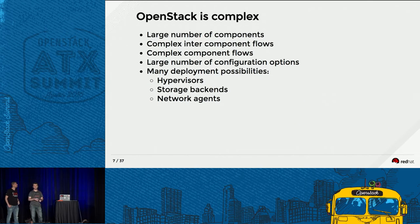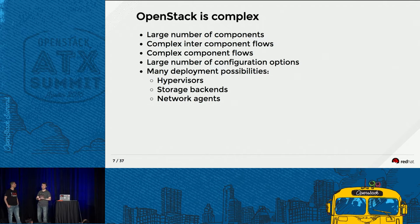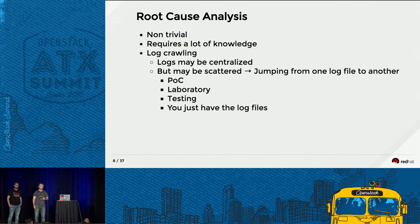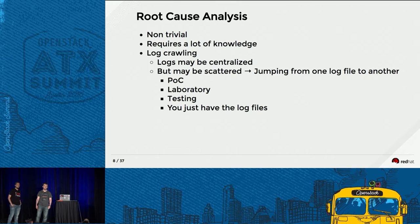As we said, OpenStack is complex. It has a large number of components with complex interactions between one another and complex flows inside each of them. On top of that, there are many configuration options that could go wrong and many deployment possibilities — different backends, hypervisors, network agents. So when determining root cause analysis of any problem, most cases are non-trivial. You may be lucky and find something easy, but usually not, because otherwise you would have done it correctly from the start.